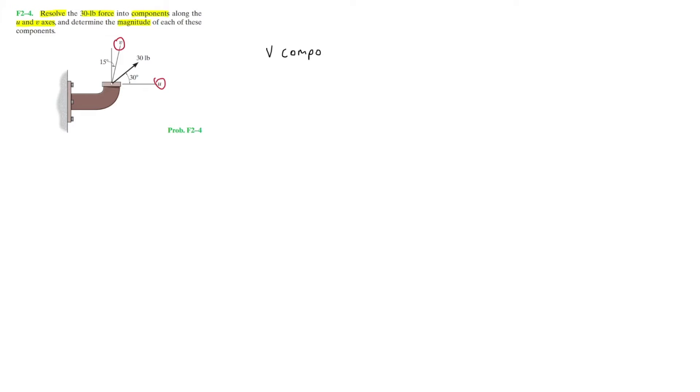Starting off with the V component here of the force, we can go ahead and redraw the original force. That's 30 pounds. Then here we have the V axis and the vertical line along with the direction of 15 degrees. Now forming a triangle and adding in the horizontal line, and that's 30 degrees.